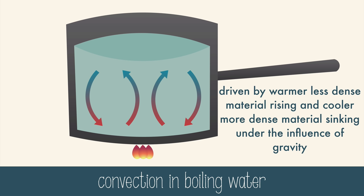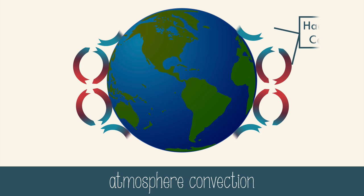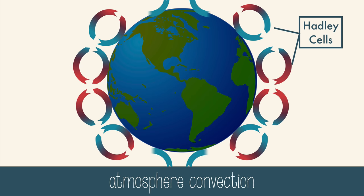Convection doesn't just happen in pots of water, either. In our atmosphere, there are large convection cells called Hadley cells. Because of the angle of Earth's tilt and position with the Sun, the equator receives much more consistent heat from the Sun than the polar regions. The warmed air rises from the equatorial regions, moves toward the poles, cools, then sinks back to Earth's surface. Warm air also rises at the 30-degree latitudes, which cool at the poles.